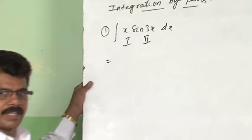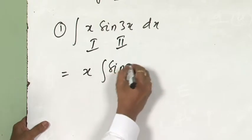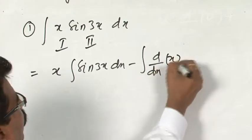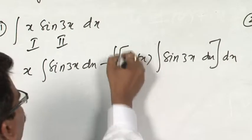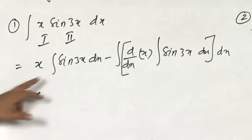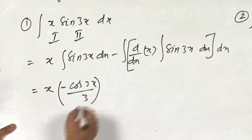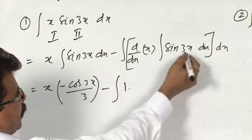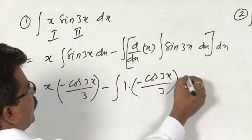Recalling the formula: first function × integral of second function − integral of [derivative of first function × integral of second function] dx. The integration of sin3x is −cos3x/3. The derivative of x is 1. So we get: x·(−cos3x/3) − ∫1·(−cos3x/3)dx.